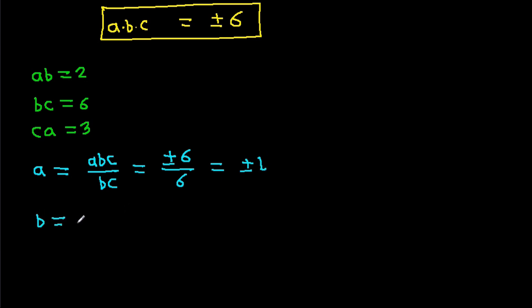B, it will be ABC divided by CA, and it will be plus or minus 6 divided by 3, that will be plus or minus 2. And C, it will be ABC divided by AB, that will be plus or minus 6 divided by 2, that will be plus or minus 3.